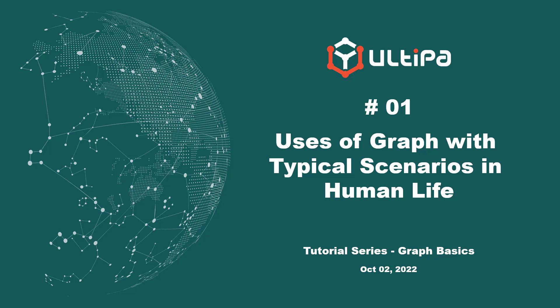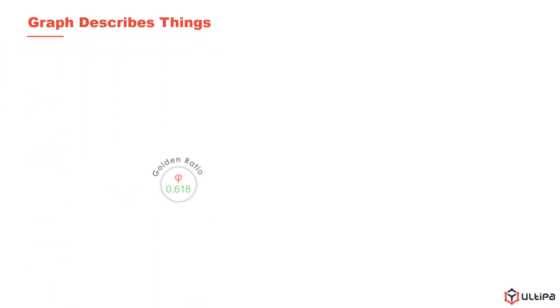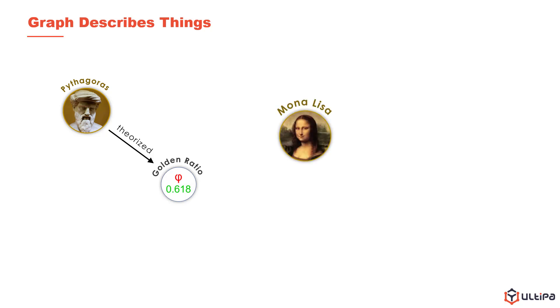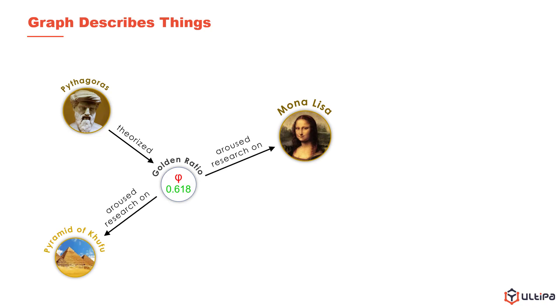Hi, welcome to this tutorial series on graph basics. In this video, we will see how the graph describes things in the world. Imagine you hear your friends discussing the golden ratio theorized by Pythagoras. You are not interested in this topic until someone mentions Mona Lisa and the Egyptian pyramids, on which people used to research about the golden ratio.